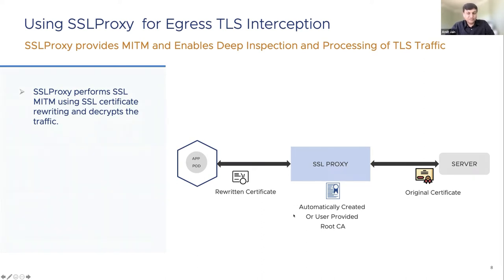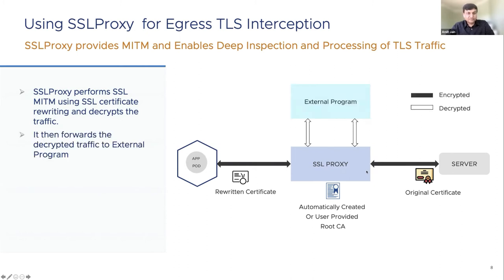The root CA used by SSL proxy enables certificate rewriting, which allows SSL proxy to perform SSL man-in-the-middle with two independent sessions — one toward the application and another toward the backend services. This allows SSL proxy to decrypt data coming from the application and re-encrypt it before forwarding to the backend server. One key feature is that SSL proxy can redirect decrypted TLS traffic to an external program for further processing and inspection, and the external program can process and redirect traffic back to SSL proxy.